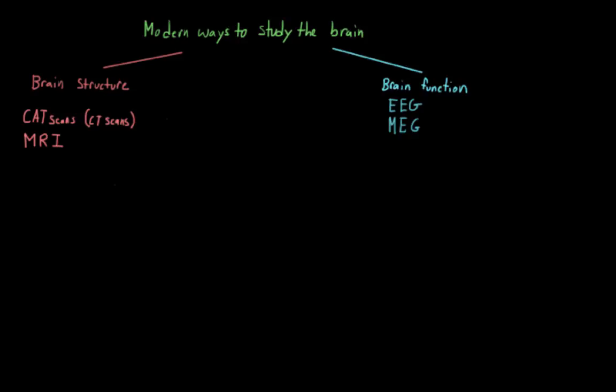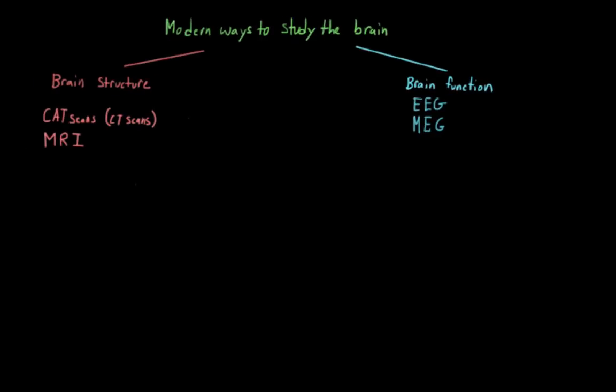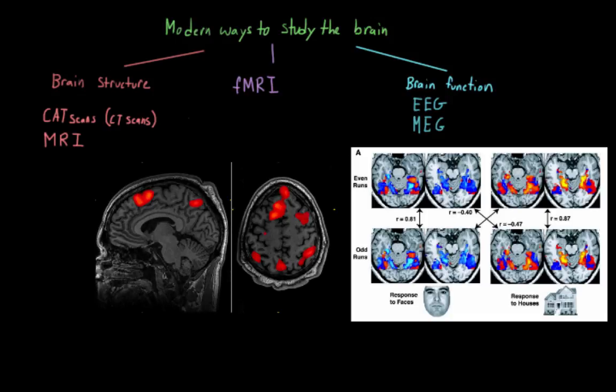So we have structural imaging here and functional imaging here. One thing that you might be thinking is, wouldn't it be great if we could combine them? And we can. The most popular and well-known of these combined methods is fMRI, which stands for Functional Magnetic Resonance Imaging. In this case, we have the same structural image from the MRI, but we can also look at which of these structures are active.